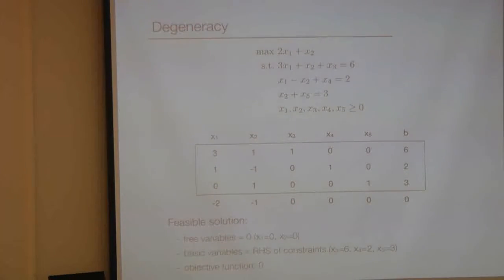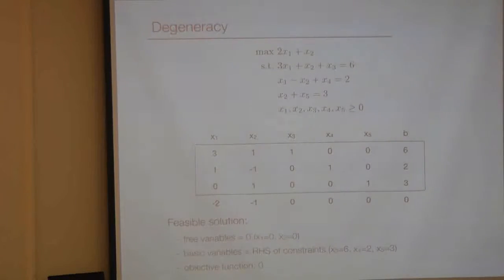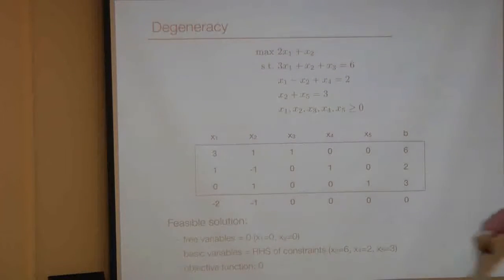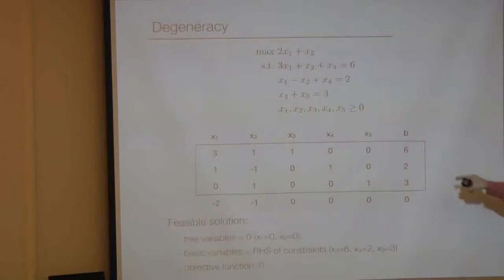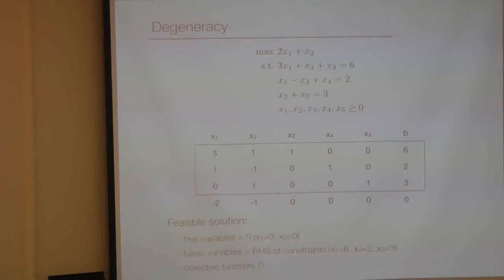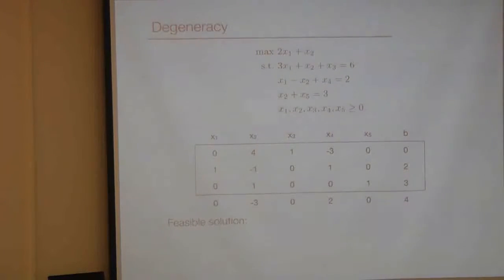Now we perform the pivot. We look at which entry in the objective row is most negative — that's x1. Then we look at the ratios: 6 over 3, 2 over 1, and 3 over 0 which is infinity. The smallest ratio is actually a tie — 6 divided by 3 equals 2 divided by 1. This is where the solver might apply some randomization. Let us pick the second row as the pivoting row and perform the pivot to obtain a new solution.